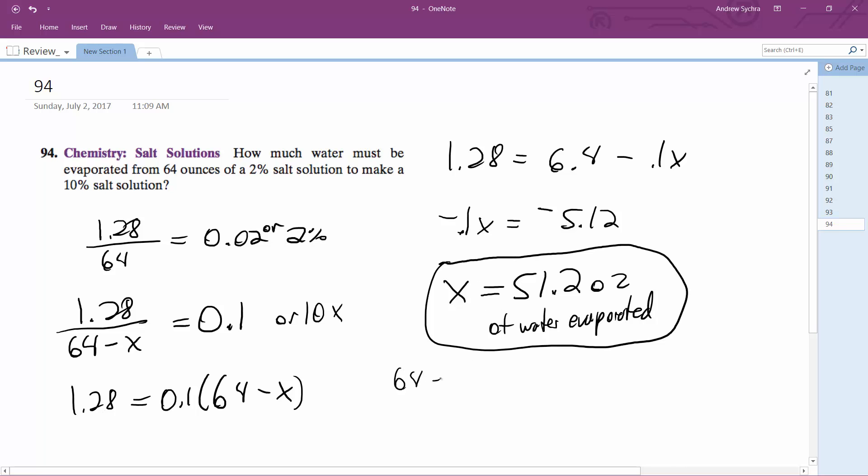If you do 64 minus 51.2, you get 12.8. And 1.28 ounces of salt over 12.8 ounces of water gives me 10% salt solution. That's it. I hope that helps you.